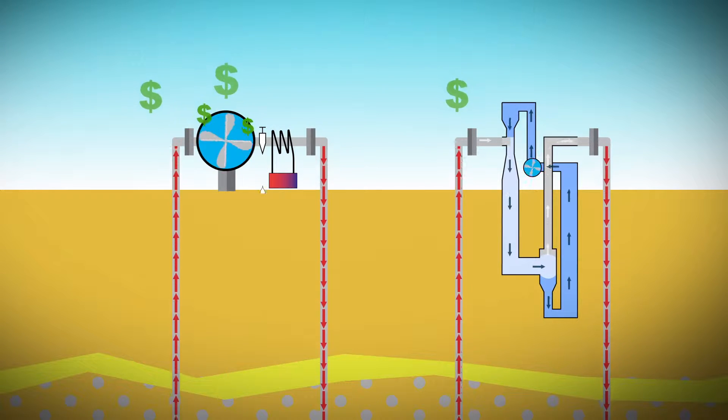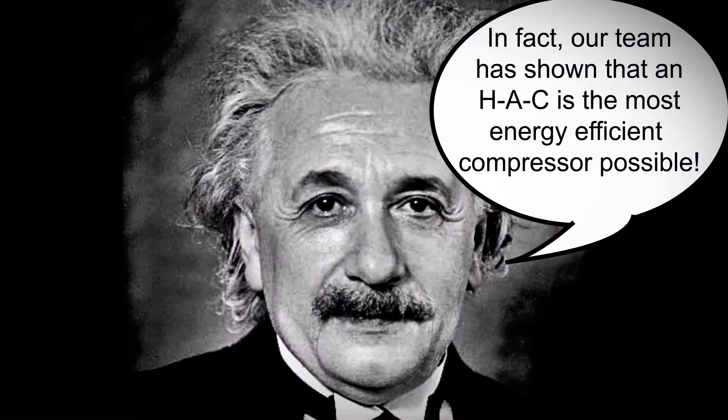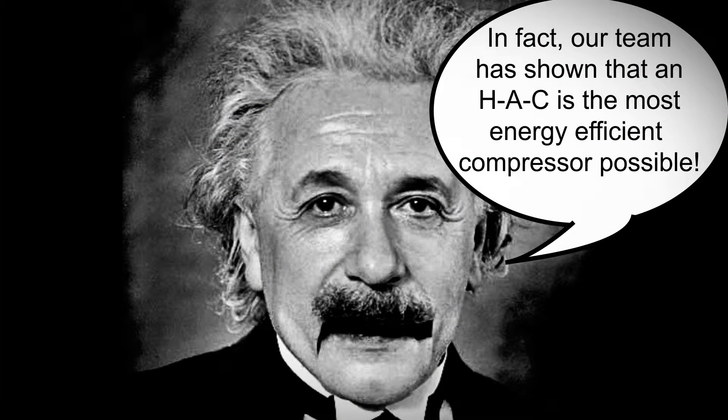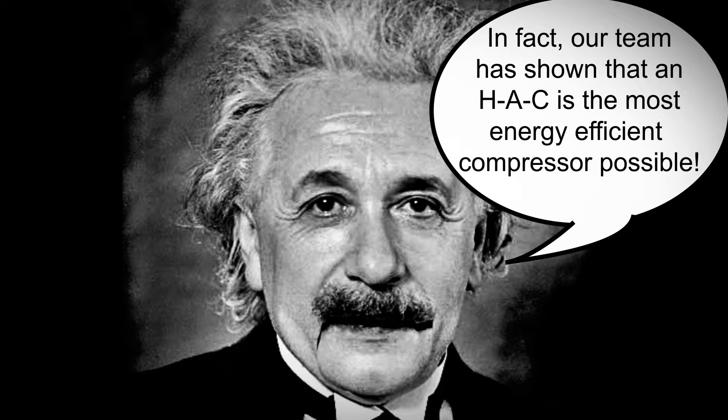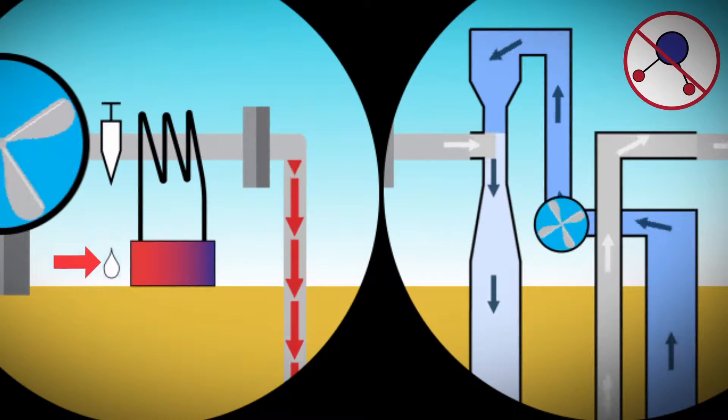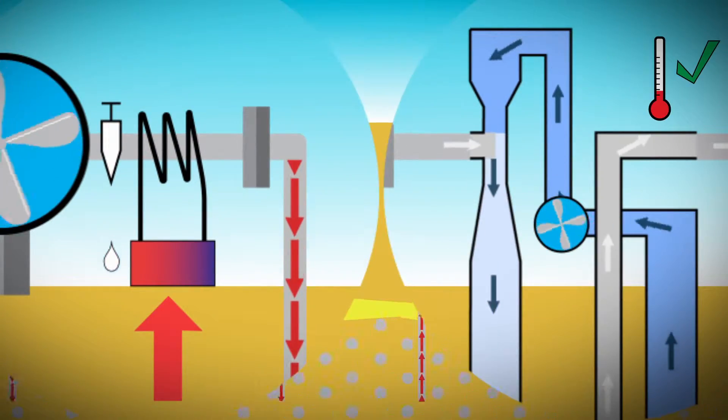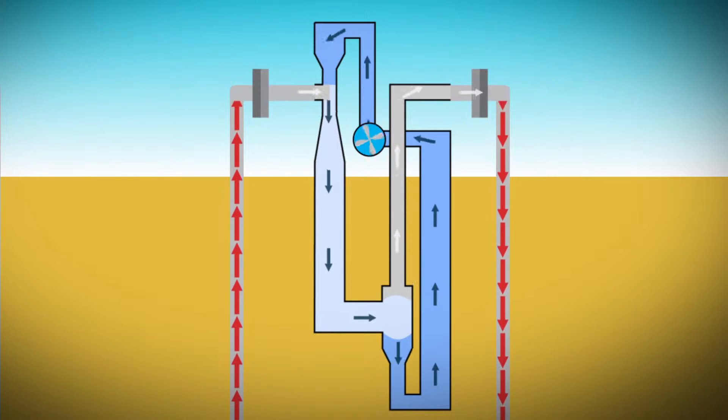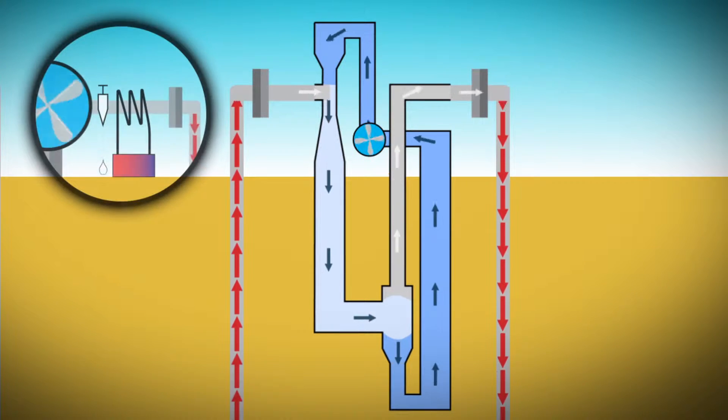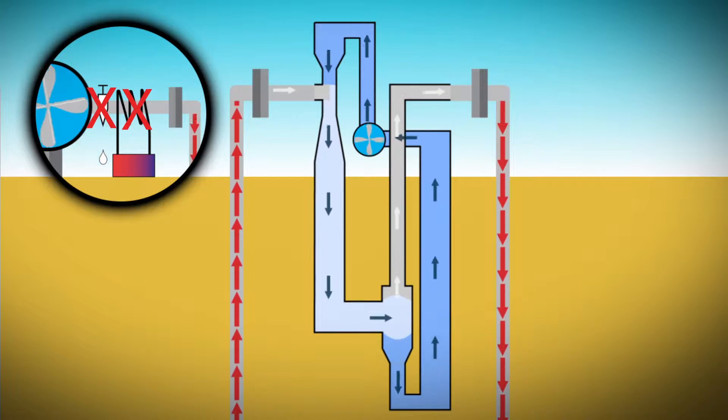This means that less input energy is needed to drive an HAC than any other type of compressor, therefore making it cheaper to run. In fact, our team has shown that an HAC is the most energy efficient compressor possible. It also delivers dry air and cool air as an integrated part of its operation, without needing the bolt-on equipment that a jet engine compressor needs to produce the same quality of air.